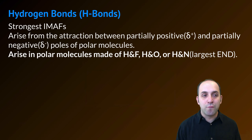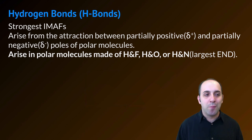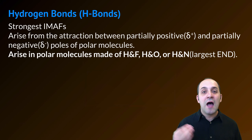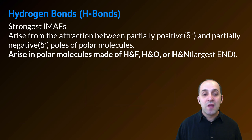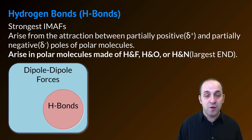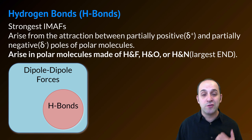Our final type of intermolecular force is hydrogen bonds, or H bonds. These are the strongest intermolecular attractive forces, though they're still weaker than covalent bonds. These come from the attraction between the partially positive and partially negative poles of polar molecules, but only in specific cases — only when those molecules are made out of hydrogen and fluorine, hydrogen and oxygen, or hydrogen and nitrogen. That's because these molecules will have the largest electronegativity difference between the atoms. Hydrogen bonds are just a subset of the larger phenomenon of dipole-dipole forces, but because they're so much stronger, we consider them to be their own separate category.